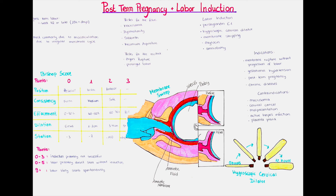Another way to induce labor is by mechanical techniques, such as the transcervical Foley catheter. Here, a small catheter is passed through the cervical opening and then inflated. After inflation, it is slowly and carefully moved downwards, creating a tension that can help the cervix to dilate and efface — meaning to become thinner. Another method is hygroscopic cervical dilators. Hygroscopic means that it absorbs water. An approximately 4-millimeter device is introduced into the cervix, left there for many hours, and slowly takes up water from the surrounding tissues, which causes it to expand and slowly open the cervix.